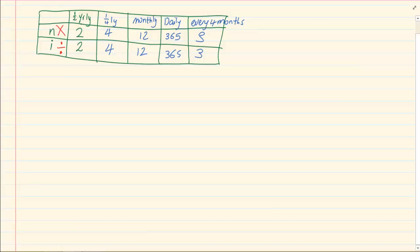So we had the half yearly, the quarterly, monthly, daily and every four months. Now what happens when they're compounded differently is that the N and the I are affected.